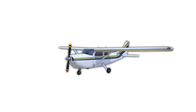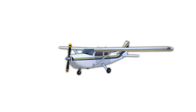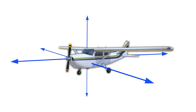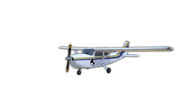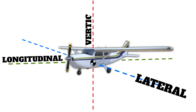Unlike a car or a truck, an airplane is able to move in three dimensions. It's able to do this because it rotates around its center of gravity on three different axes: the lateral axis, the longitudinal axis, and the vertical axis. We're going to be discussing each one of those in detail, and if you're taking notes, you're going to want to remember these for the written exam.